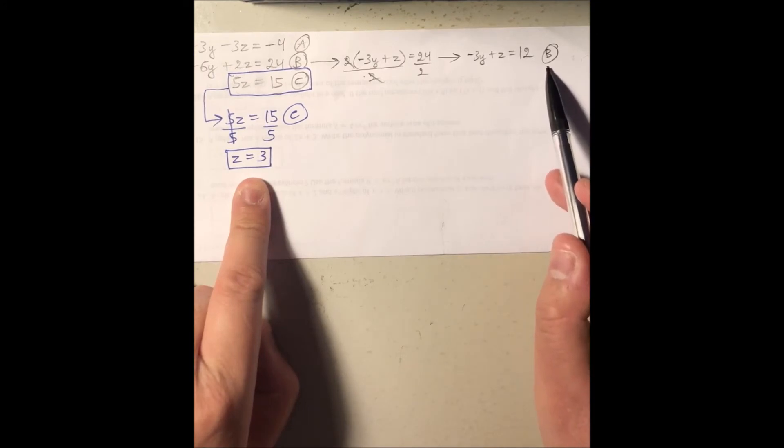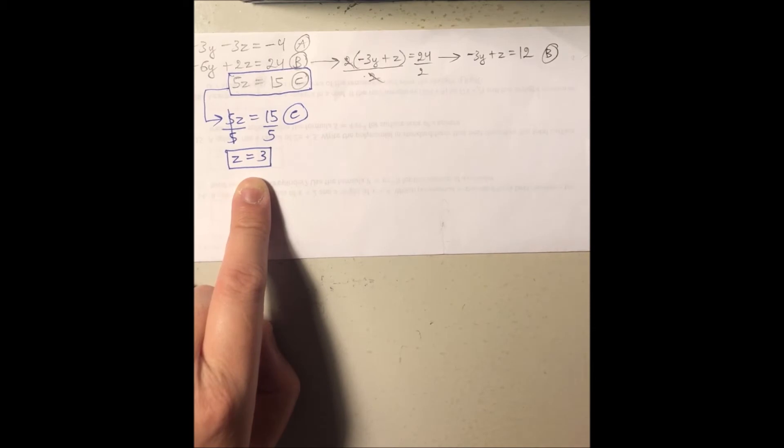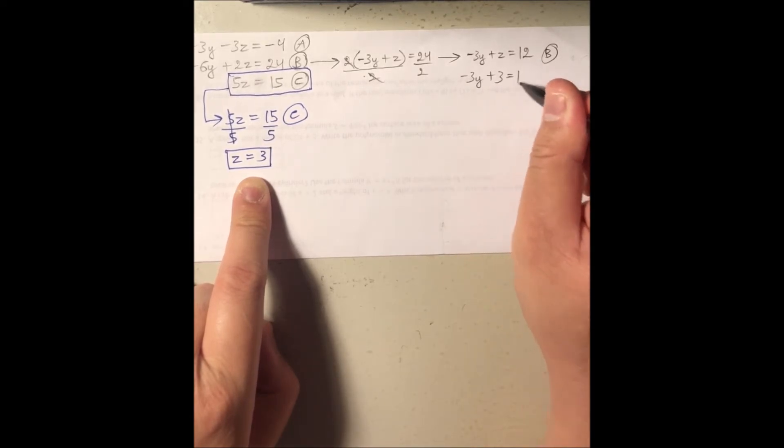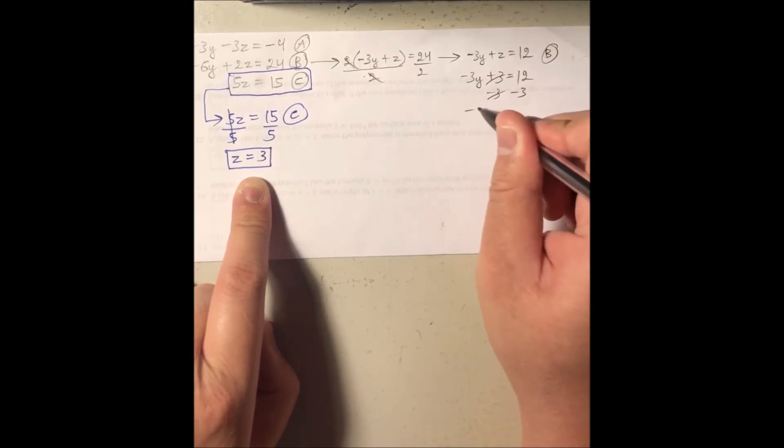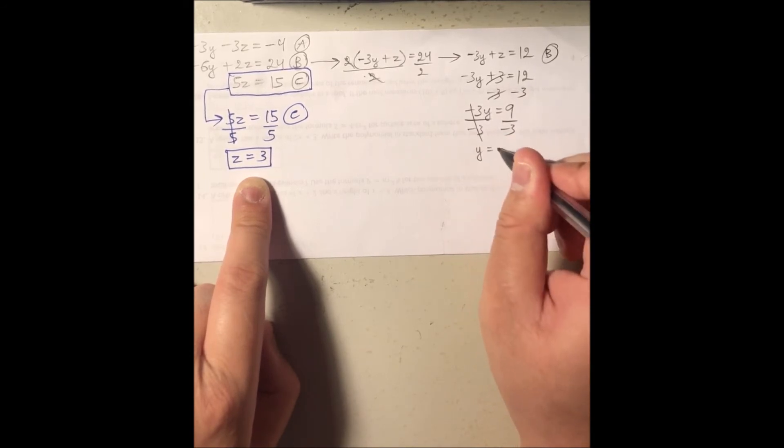But with z equal 3, and with the B equation here, that tells me that if I take z equal 3, replace this z with positive 3, I get to solve for y easily. So what is that gonna give me? Well, I'm gonna get negative 3y plus 3 equal positive 12, and then subtract 3 from both sides. I'm left with minus 3y equal to positive 9. Divide both sides by negative 3. I got y equal to negative 3.